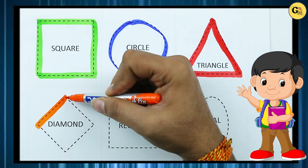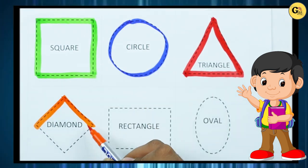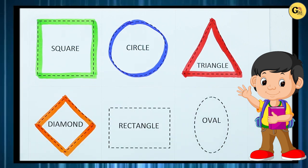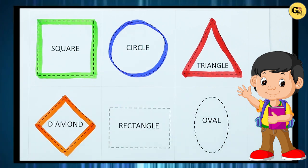One sliding line, two sliding line, three sliding line, four sliding line. It's a diamond, orange color diamond.